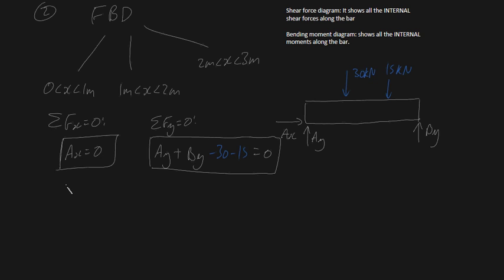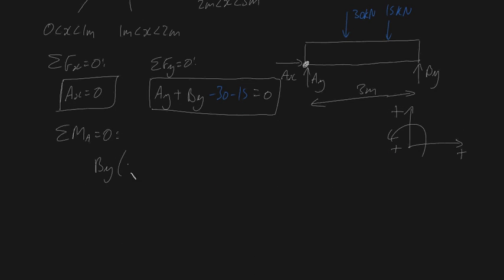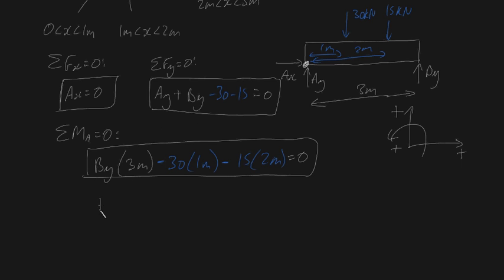We still need another equation, so let's take the sum of moments around point A equals 0. Using the right-hand rule for positive convention, By times 3 meters minus 30 times 1 meter minus 15 times 2 meters equals 0. With 3 equations and 3 unknowns, we can solve: By equals 20 kilonewtons and Ay equals 25 kilonewtons. Our reaction forces are sorted.